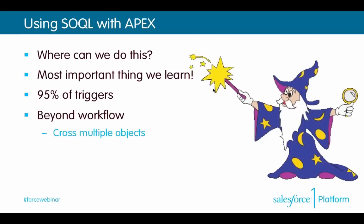Everything you've learned in Webinars 1, 2, and now 3 is building up to this one moment. We are reaching what is Apex Trigger Nirvana — combining SOQL queries and Apex Triggers to do amazing things. We're going to write this deduping trigger. With SOQL, everything in your entire database is available to you — you just have to query it. You know how to update records and create new records. Whereas with workflow you'd only have access to the current record and maybe its parent, now we can do absolutely anything.